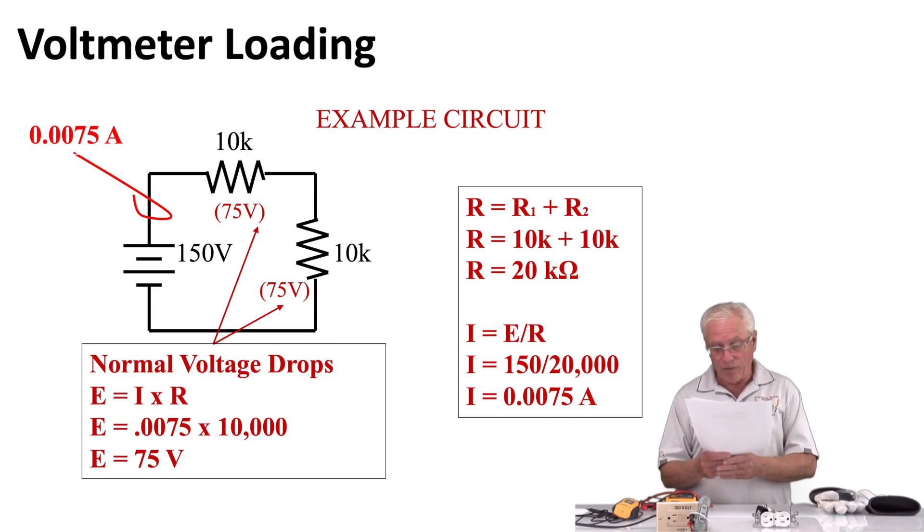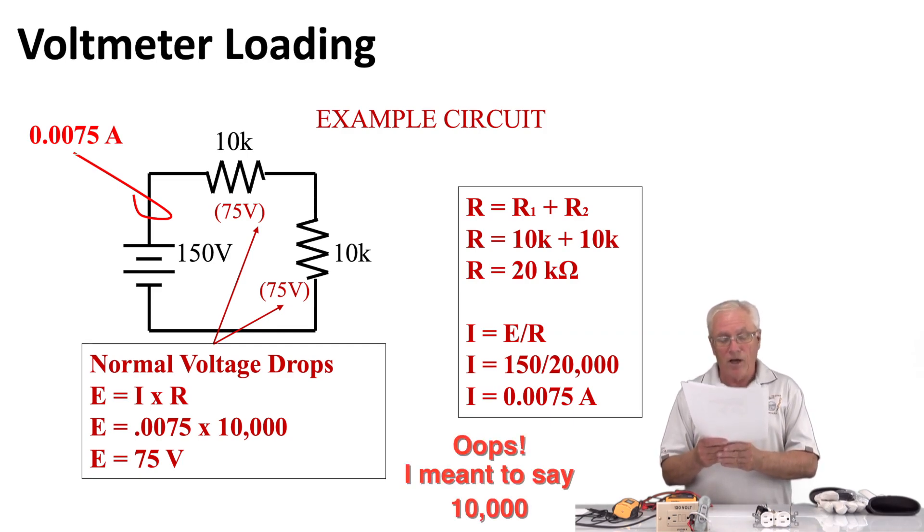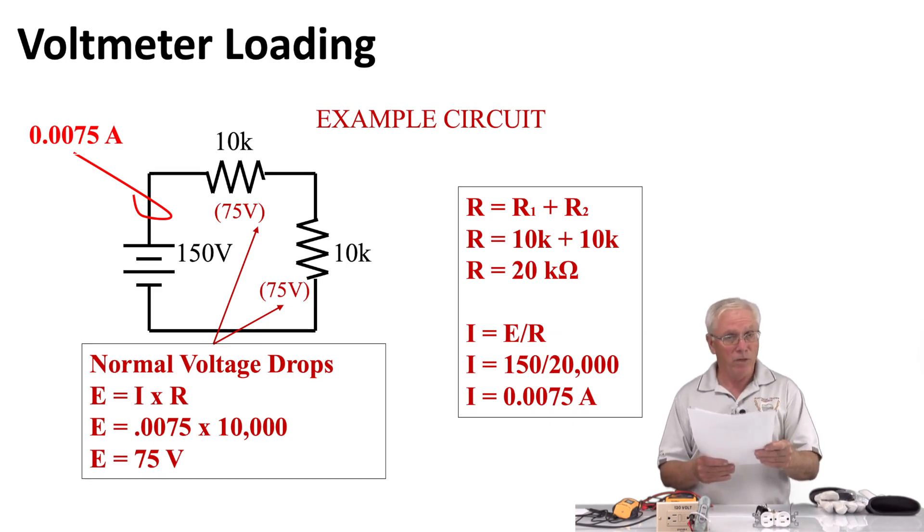Below that, you'll see we want to find the current, we simply divide E divided by R, so 150 volts divided by 20,000 ohms will give us 0.0075 amps, which is basically 7.5 milliamps. We can determine each voltage across the resistor. If we do E equals I times R, if we take 0.0075 times 10,000 at each of these resistors, we should have a voltage drop of 75 volts on each resistor. That will be under normal conditions. In a moment, we'll see what happens when we put a meter on the circuit.